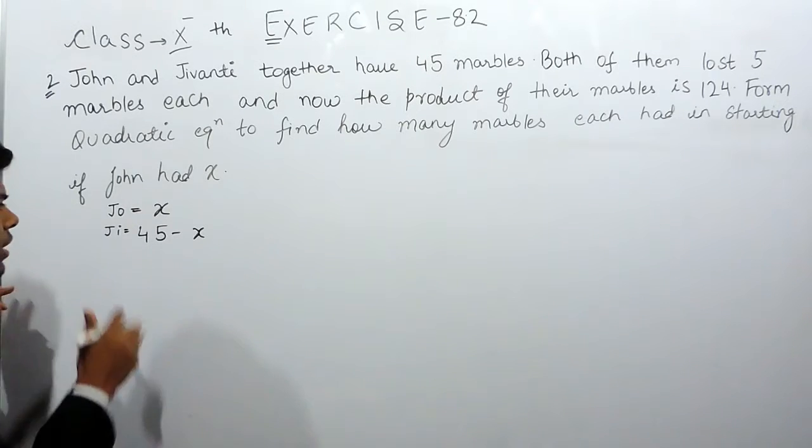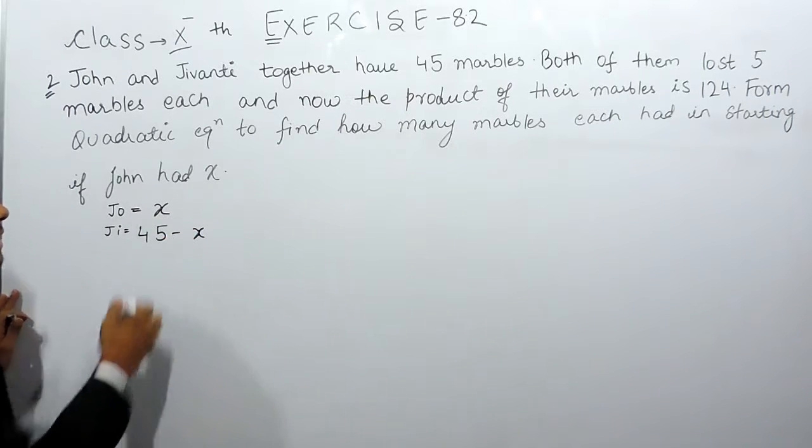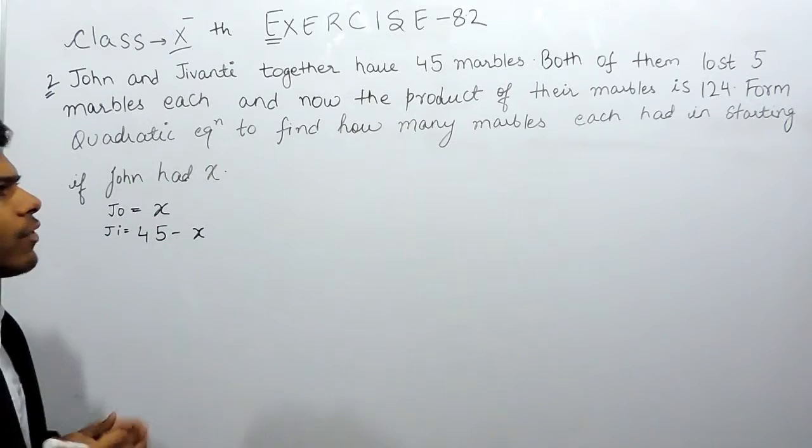That is why together means this plus this will be equals to x plus 45 minus x and minus x and plus x will get cancelled out. We will get that total. They had 45 marbles.